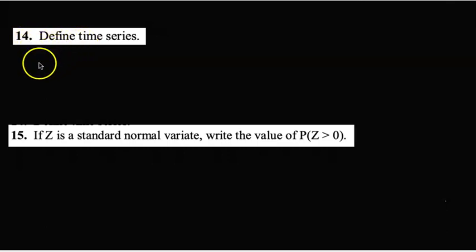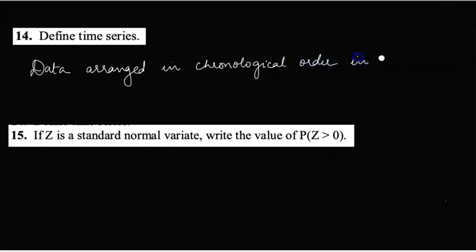14th question: define time series. Data arranged in chronological order in accordance to time is called time series.